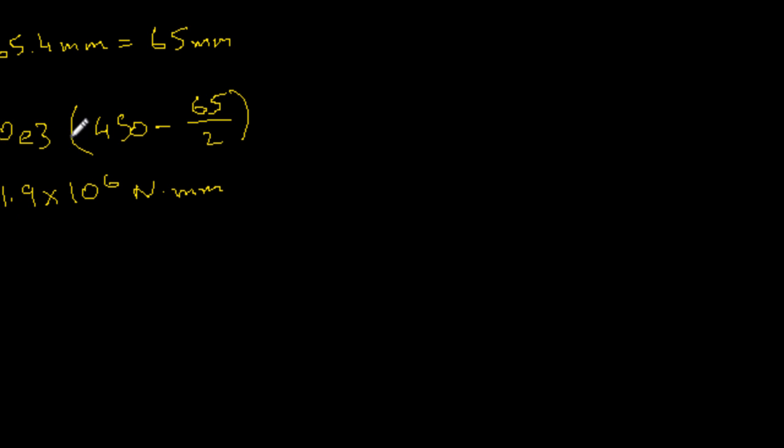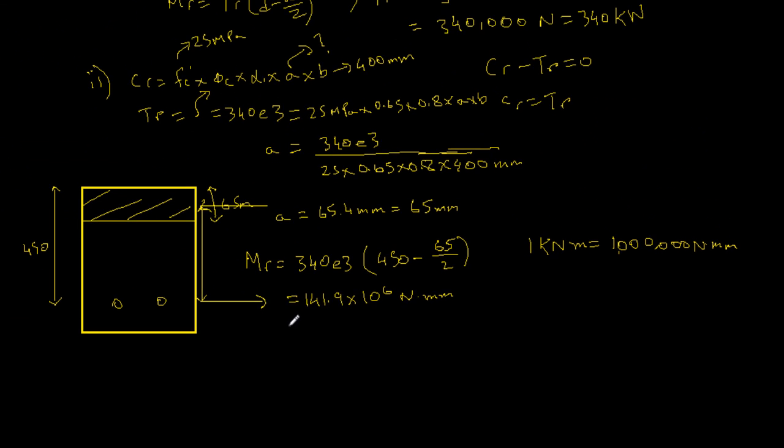141.9 times 10 to the power of 6 Newton millimeter. But we want everything in kilonewton meter, so 1 kilonewton meter equals 1 million Newton millimeter. Therefore our answer is, if we round it up, 142 kilonewton meter.